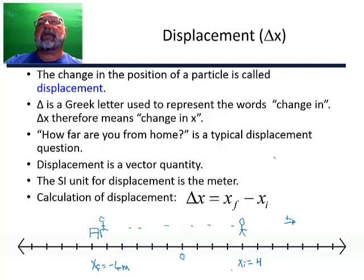Now let's find our displacement using the formula. Okay, so I'm going to write it up here. Delta x is equal to x final minus x initial. So my final position is negative six minus four, which is the initial position. And negative six minus four is negative 10 meters.